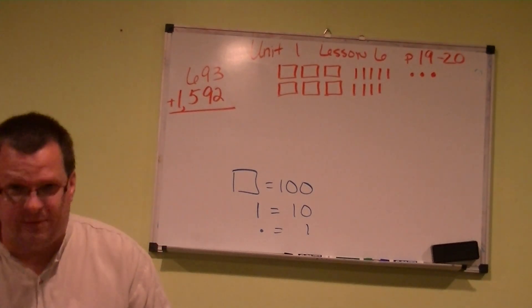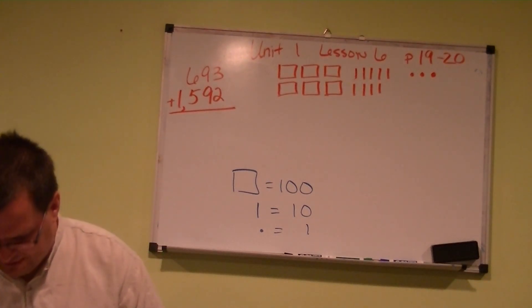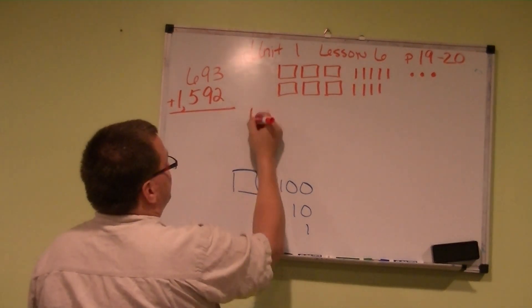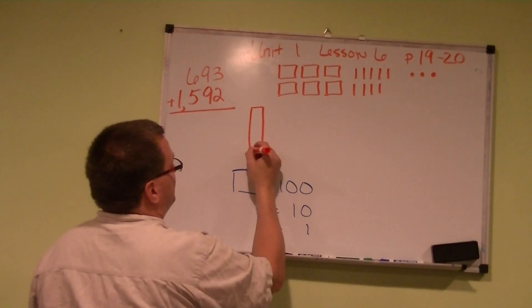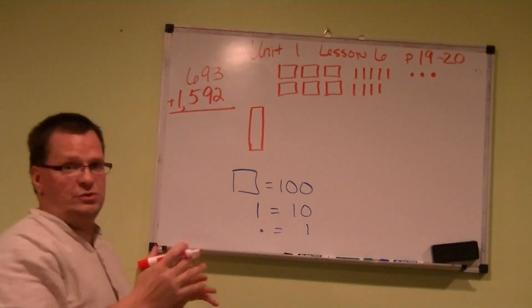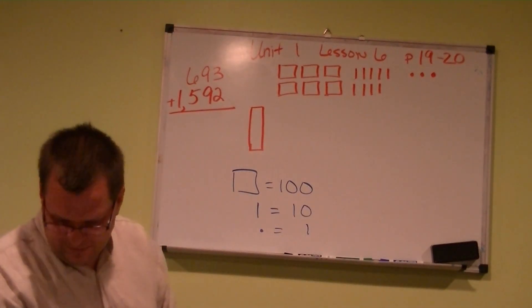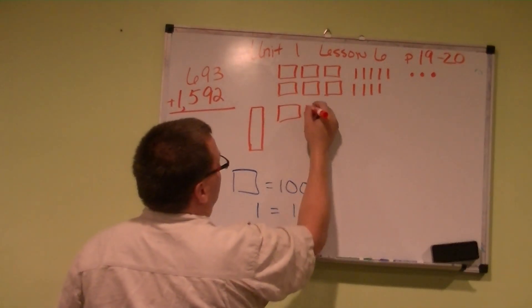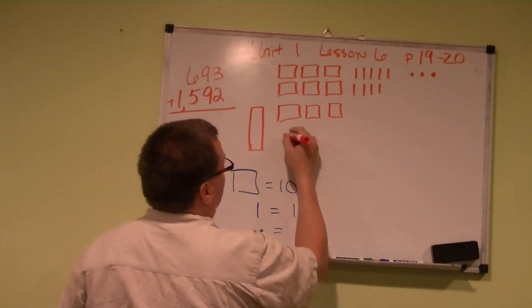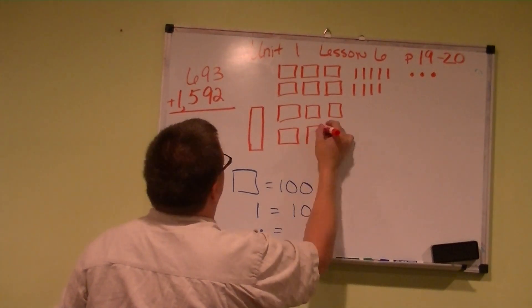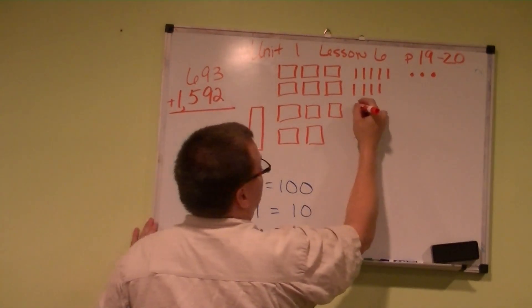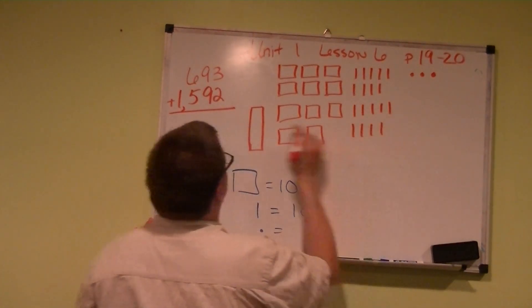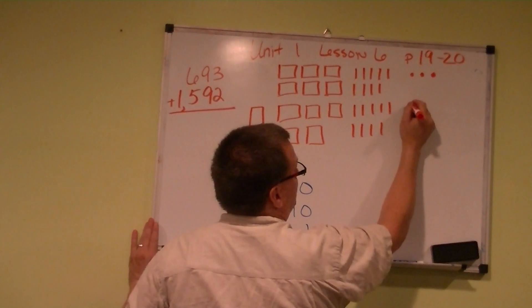Then our next one, we have a new number. We have 1,000. 1,000 is a little bit different. So 1,000 is going to be huge. We'll make a huge, huge block. And then we have 5 hundreds. Then 9 tens: 5, 6, 7, 8, 9. And then 2 ones: 1, 2.